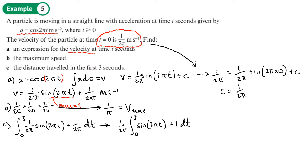Now we integrate. Using the reverse chain rule, sine(2πt) integrates to −cos(2πt)/(2π), and 1 integrates to t.